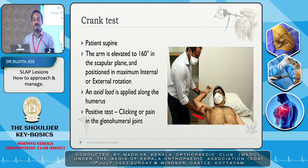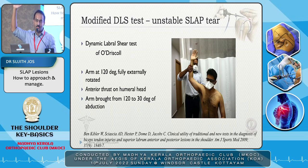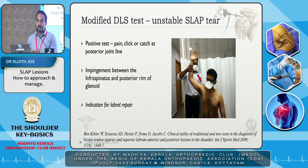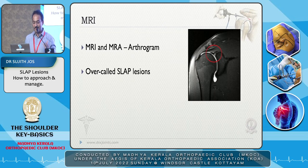The crank test is done by many surgeons — you give an axial load with the hand in 160 degrees of flexion, and there may be clicking and popping pain. The DLS test is for an unstable SLAP tear, where a dynamic anterior force is applied at 120 degrees and the arm is brought from 120 to 30 degrees, giving an anterior thrust — pain is reproduced posteriorly due to impingement between the infraspinatus and posterior rim. In practice, just learn the O'Brien test when discussing basics.